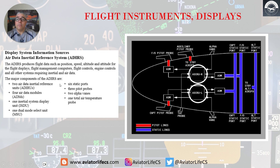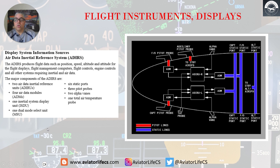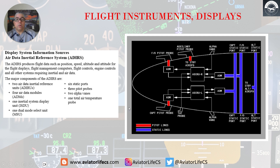So we have two AirData Inertial Reference Units — you can see them there. Four AirData Modules — there they are. One Inertial System Display Unit, or ISDU. One Dual Mode Select Unit, MSU. We have six static ports, three Pitot Probes, two Alpha Vanes, and one total air temperature probe.